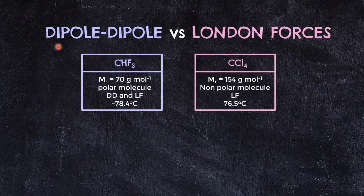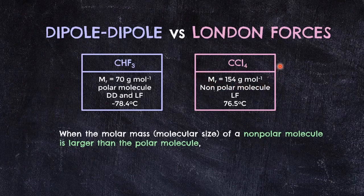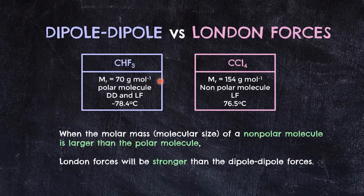We know that between the two types of van der Waals forces, dipole-dipole forces in polar molecules have greater strength than London forces in non-polar molecules. But there is a situation where London forces can overshadow dipole-dipole forces. This exception applies when the non-polar molecule is much bigger than the polar molecule — about 10 times bigger. For example, CCl4 is a non-polar molecule with 154 g/mol, in contrast to CHF3, a polar molecule with only 70 g/mol. The London forces of CCl4 are then stronger than the dipole-dipole forces of CHF3 due to the size difference.